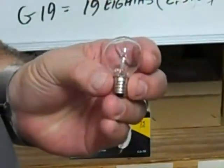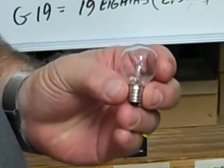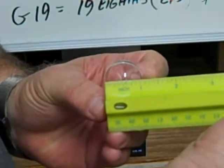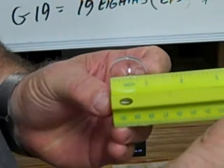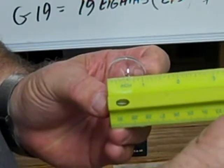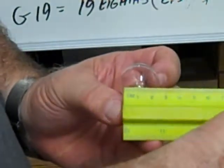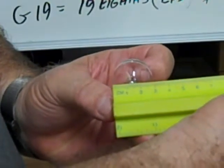This is a G 9½. Measures 9½ eighths of an inch across the globe envelope. And that's equal to 1⅕ inch. And in millimeters, it's 30½ millimeters.